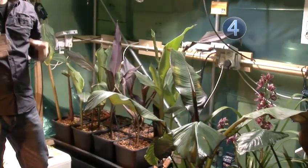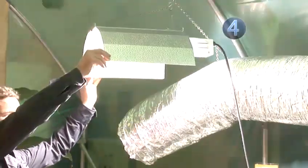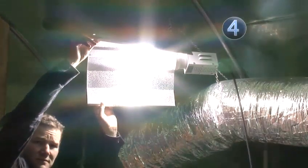The reflectors increase the light intensity by reflecting and bouncing it onto the plants. Some reflectors are adjustable so they can be opened wide to spread the light or closed down to direct the light.